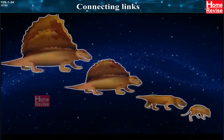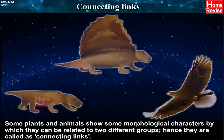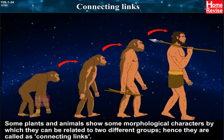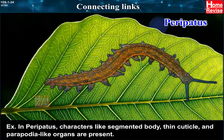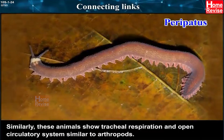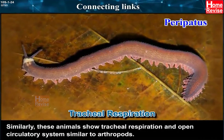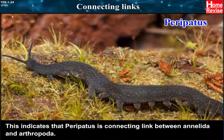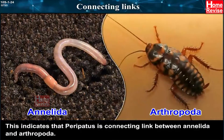Connecting Links. Some plants and animals show morphological characters by which they can be related to two different groups; hence they are called connecting links. For example, in Peripatus, characters like segmented body, thin cuticle and parapodia-like organs are present. Similarly, these animals show tracheal respiration and an open circulatory system similar to arthropods. This indicates that Peripatus is a connecting link between Annelida and Arthropoda.